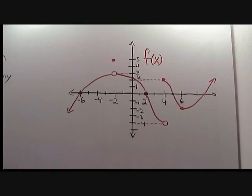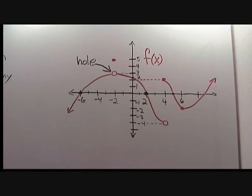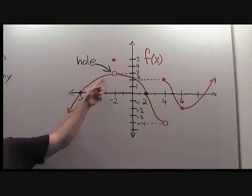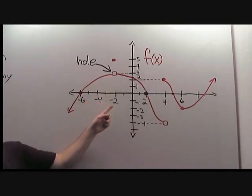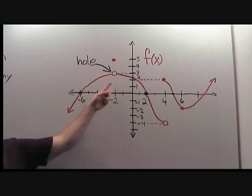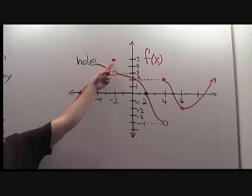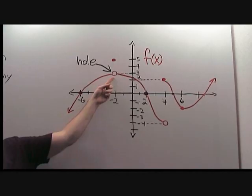We now look for any holes or any jumps in the graph of f. The places where a hole or a jump occurs will be a place where f is not continuous. At x equals negative 2, there is a hole. We see that the graph should continue on to y equals 3 when x is negative 2. However, f is such that f of negative 2 is 5, so therefore there is a hole right here.